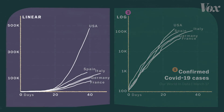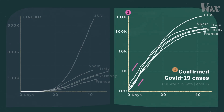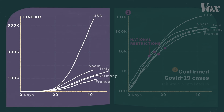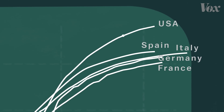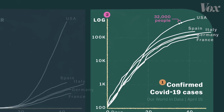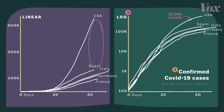Fast forward a few weeks, and the linear scale shows cases climbing and climbing, while the log chart shows curves that are flattening. As governments have implemented lockdowns and social distancing, the virus is spreading at a slower rate than before, which isn't very visible on the linear scale. But keep in mind that the difference between this dot and this dot is more than 32,000 people, and the log chart tends to downplay just how many more confirmed cases there are in the U.S. than in the other countries.